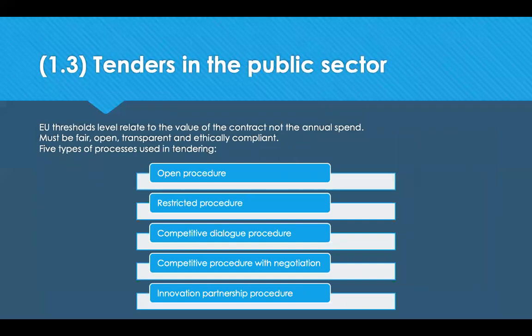An additional burden in public sector procurement is being governed by EU procurement regulations — designed to ensure public procurement is fair, transparent, open and ethically compliant. These regulations apply above certain value thresholds: currently around £180,000 for goods and services and approximately £4.7 million for works, though these thresholds are reviewed every two years. Note: this content was recorded before the UK left the European Union, so do check current regulations.